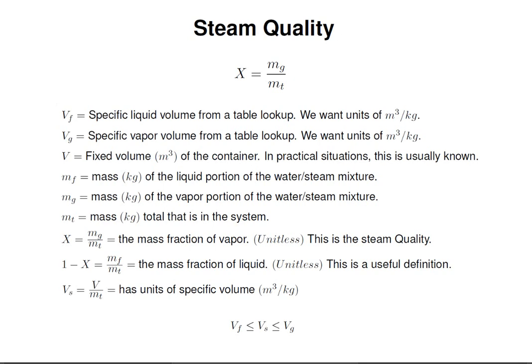Vs is the volume of the fixed volume of the container divided by the total mass. This has units of specific volume, cubic meters per kilogram. In engineering, it's often called the system's average specific volume. V over mt should be calculated because if it isn't in the range, then we aren't in saturation conditions, and steam quality has no meaning. So Vs needs to be in between Vf and Vg.